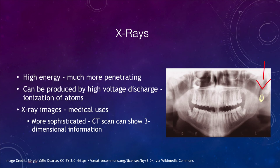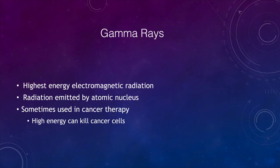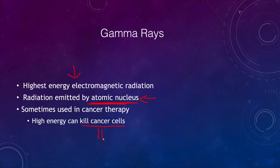The last type we want to look at are gamma rays — the highest energy radiation. These are emitted by transitions within an atomic nucleus, whereas x-rays were emitted by electrons. They have medical uses as well: because of their very high energy, they can kill cells and especially cancer cells. This makes them useful in radiation therapy to help eliminate cancer from a patient.